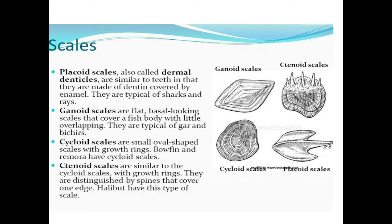Cycloid scales are small, oval-shaped scales with growth rings. As fish age increases, the rings between the scales increase. Fishes with more rings show more age. These cycloid scales are found in bonyfishes.